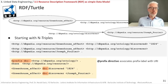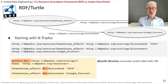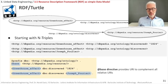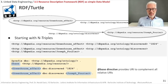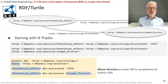In RDF Turtle, prefix definitions start with @prefix, then the abbreviation followed by a colon, then the URI in angle brackets, and closed with a full stop. You can also define a base URI using @base — any relative URI without an explicit prefix automatically gets extended to a full absolute URI using the base directive. For example, 'greenhouse effect' in angle brackets is extended to an absolute URI via @base.